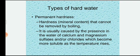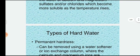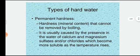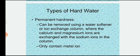These compounds become more soluble as temperature rises, making them harder to remove by heating. Permanent hardness can be removed using a water softener or ion exchange column.